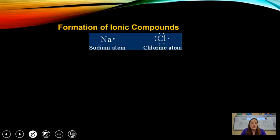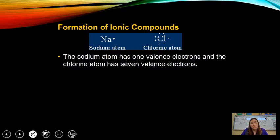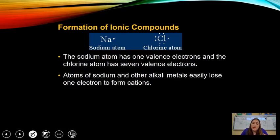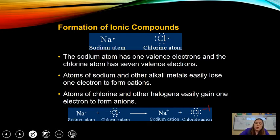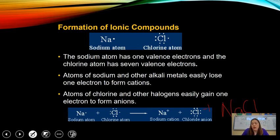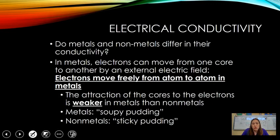In the formation of ionic compounds: sodium has one valence electron and chlorine has seven. Sodium is going to give up one electron to chlorine, making it chloride with a −1 charge. Sodium then has a +1 charge. This gives the chemical formula NaCl — plus one and minus one gives an overall neutral compound.